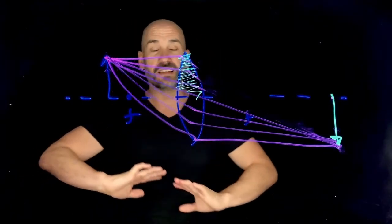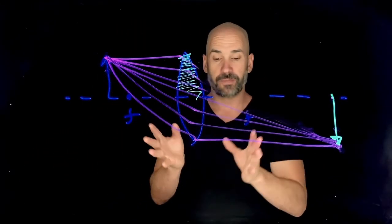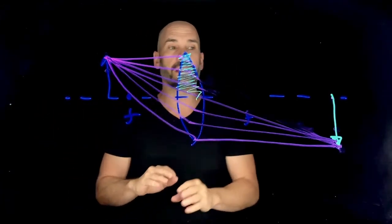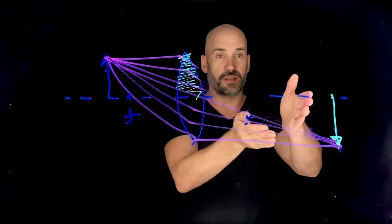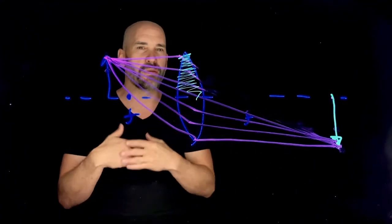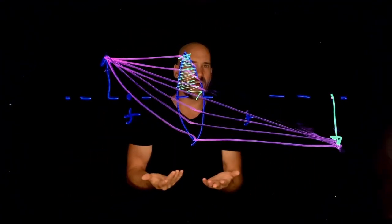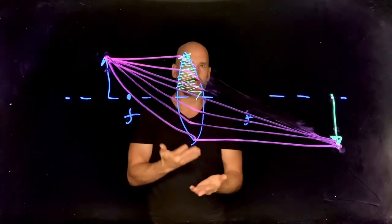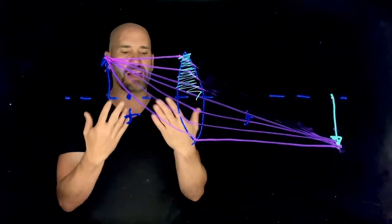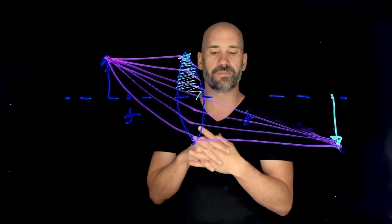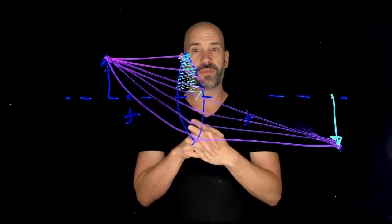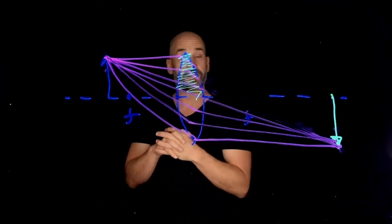We've done a very good job seeing qualitatively where images are going to be formed. But how can we find out mathematically exactly where they're going to be formed — the actual image location? That's what we're going to do in the next video.